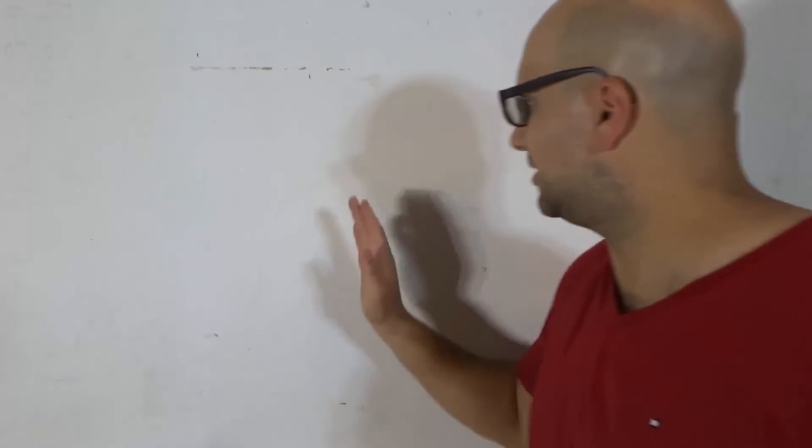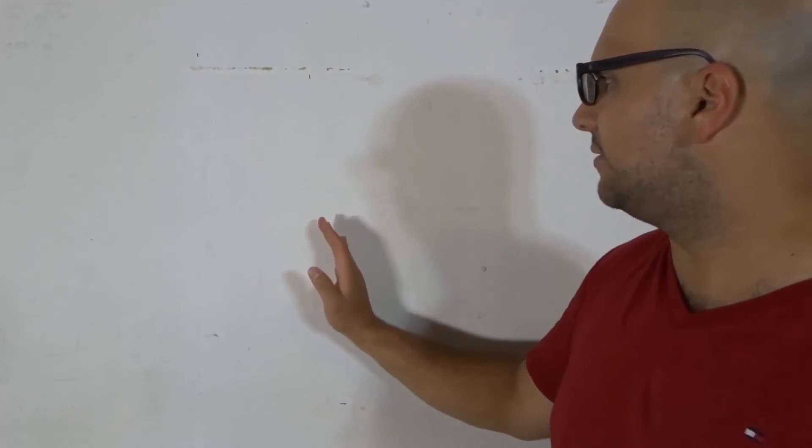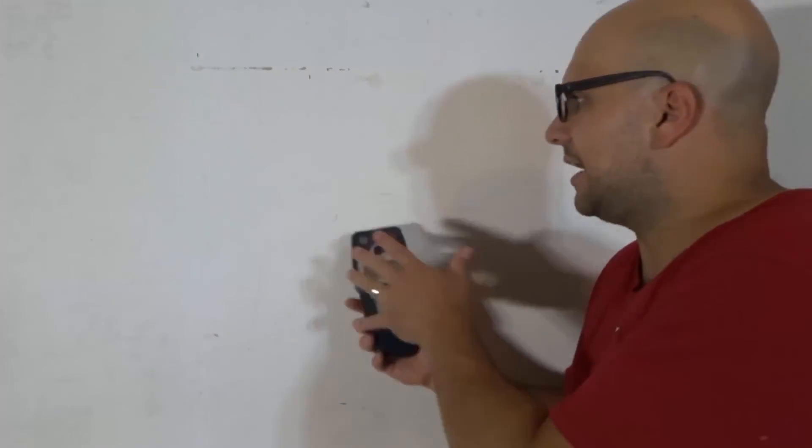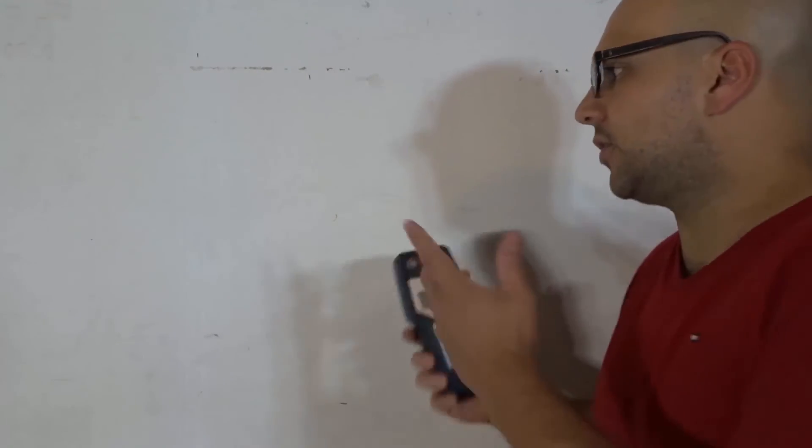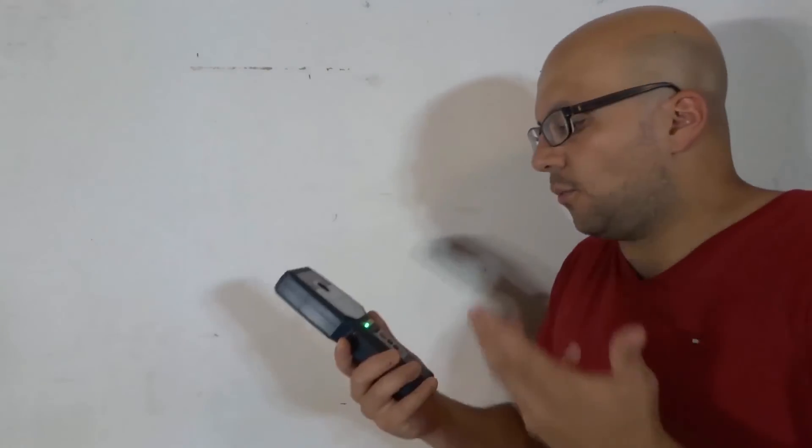So I did it twice. It's telling me there's a stud somewhere around here. I'm not marking it because I'm not drilling into the wall. Somewhere around here, and somewhere around here as well. So basically, it's telling me that there's a stud there and there. So that would make total sense that there are studs there. It shows that it works.